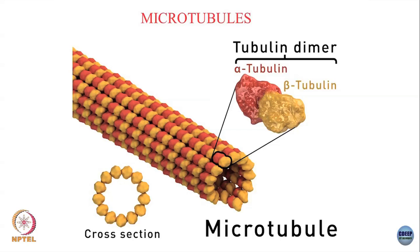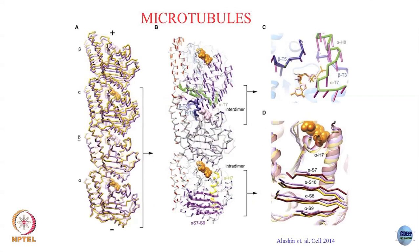This dimer forms filaments called protofilaments, and then 13 of these protofilaments form this hollow tube which is my microtubule. The structure is more complicated than actin — it is not just two filaments winding in a helix, but a hollow tube made up of these alpha-beta tubulin heterodimers. Both the alpha and beta subunits have a domain that binds GTP, and this GTP at the beta subunit can hydrolyze to form GDP and release energy, exactly like ATP hydrolyzes for actin.